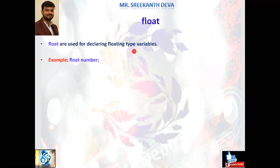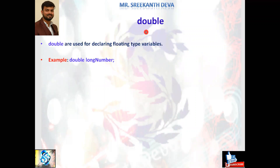float is used for declaring floating-point type variables. For example, float number = 10.25, 20.75. We can use floating-type values represented by the float data type. double is also used for declaring floating-point type variables. The difference between float and double is size: float occupies 4 bytes of memory, double occupies 8 bytes of memory. With double, we can represent long floating-point numbers.